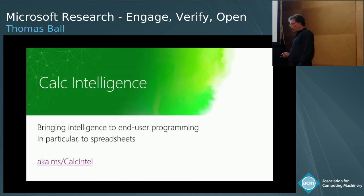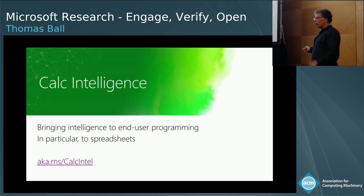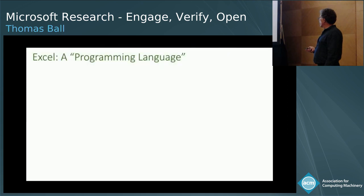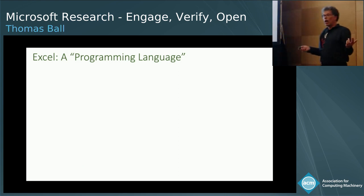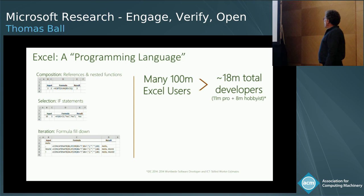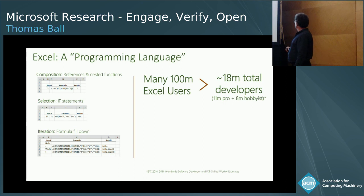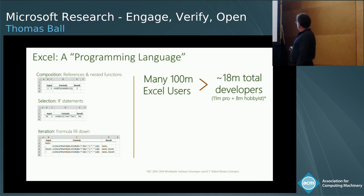Another project is Calc Intelligence, led by Andy Gordon, who is here. At a higher level in our stack, we still sell office software — Word, PowerPoint, and the Office suite. There are many, many programmers who are Excel users. If you look at the numbers, you have maybe over a hundred million worldwide users, but in terms of people who are actively writing in Excel — macros and scripts — potentially around 18 million total developers, about 11 million professional and 8 million at home.